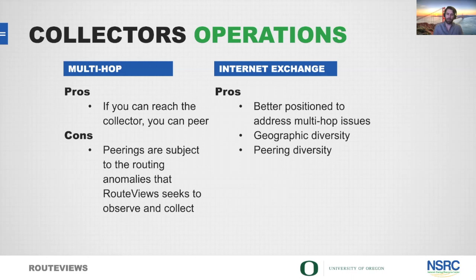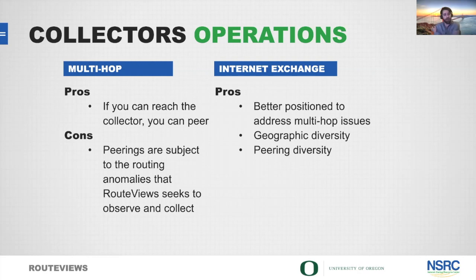Route Views has two different deployment models. The first is the multi-hop model — using eBGP multi-hop, so essentially if you can reach our collector you can peer with us. The problem with that model is those peerings are subject to the very routing anomalies we're trying to capture, so it's not ideal for research or network operations. We much prefer people to peer with us at an internet exchange like LINX. We get a more geographically diverse view and more peering diversity that way.